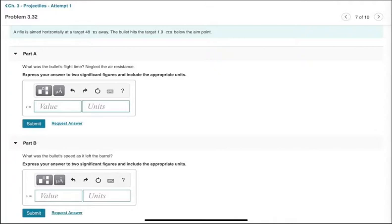The question that we solve in this video is about projectile motion. A rifle is aimed horizontally, that is along the x-axis, at a target 48 meters away. The bullet hits the target 1.9 centimeters below the aim point. In other words, the bullet drops down a little bit. We are asked what was the bullet's flight time? Neglect the air resistance. Let's get to the solution. Let's have some physics fun.